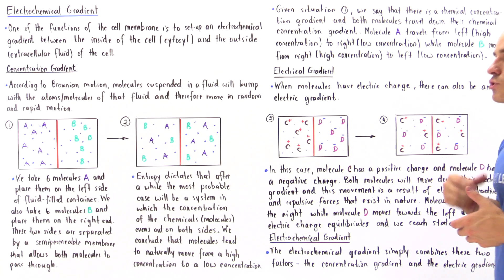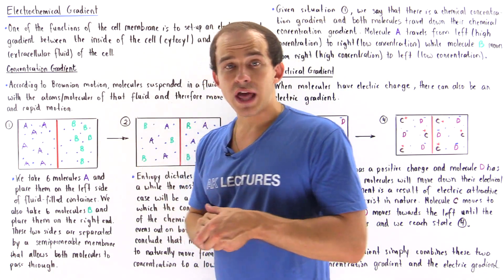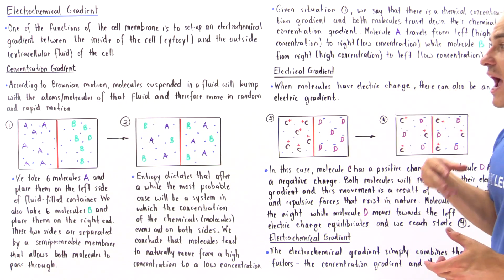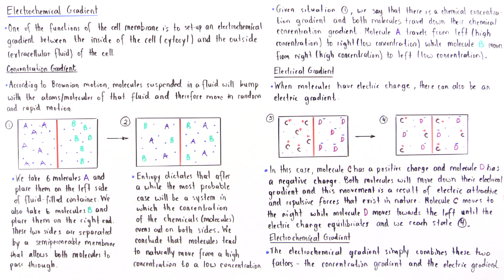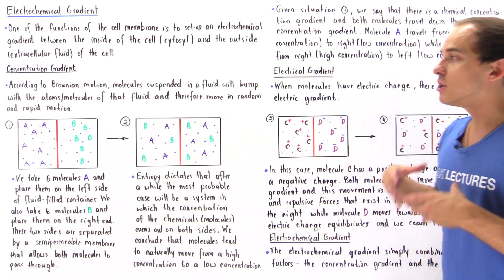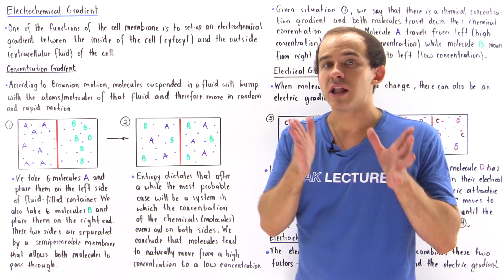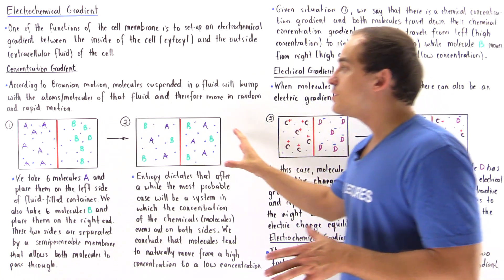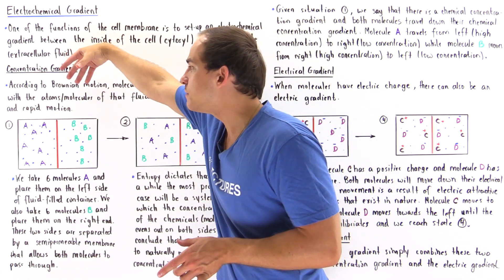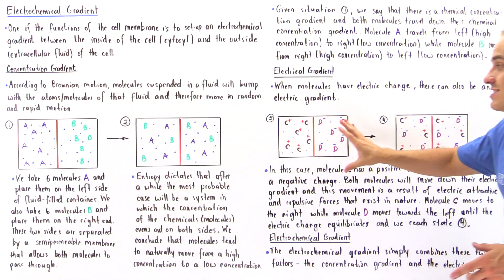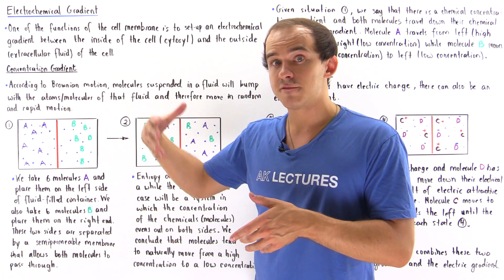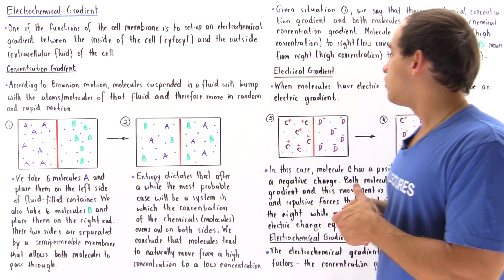Now, what about the electrical gradient? In the previous case, molecule A and molecule B were both neutral — they had no charge. Suppose our molecules now have a charge. When molecules have electric charge, there can also be an electric gradient, and the electric gradient is a result of the electric repulsive and attractive forces that exist in nature — both attractive and repulsive electric forces.